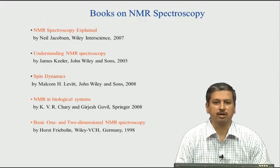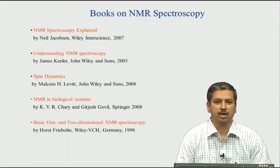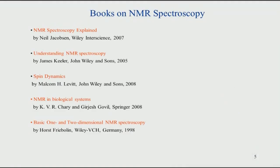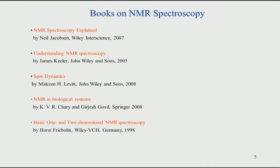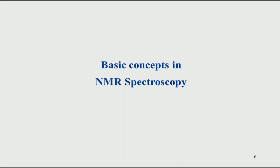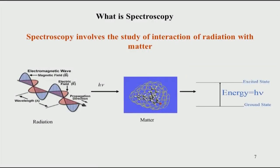Let us then begin. NMR spectroscopy is a spectroscopic technique, like many other spectroscopic methods. We need to first understand what spectroscopy means in general — what do we actually do in spectroscopy? Spectroscopy involves the study of the interaction of radiation with matter. When we say radiation, we are referring to electromagnetic radiation, which is light. Sunlight, for example, consists of electromagnetic radiation of different wavelengths.